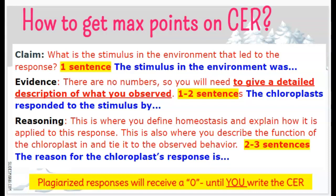Your reasoning is where the majority of your points come from — this is where you put it all together. The key idea is homeostasis, so you'll need to define what homeostasis is and explain how it is applied to this response. A possible sentence starter: 'The reason for the chloroplast response is...' I gave you a word bank in OneNote to help you, so please make sure you use those key terms and the sentence starters. Your reasoning should be two to three sentences. I've noticed on some writing samples that some students go to the internet and copy things and paste that. Whether it really addresses the question or not, that will receive a score of zero until you write it using your own words and this format.